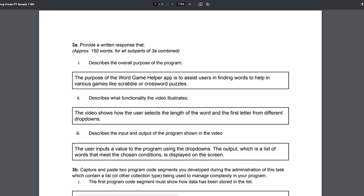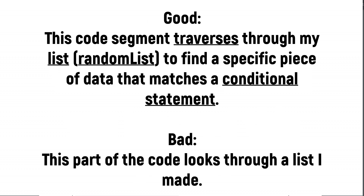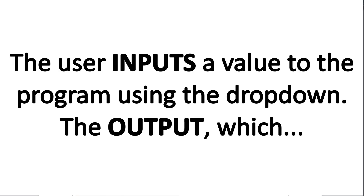It is very important in the Create task. You should be using the vocabulary you have learned this year. Use proper names. If you're talking about a variable or where something's happening in your code, name that line. Always use the variable or list or function names. Even use the data types — string, integers, stuff like that. The more specific you are, the better. And kids, it does not hurt to bold the words. If they are specifically looking for inputs and outputs, bold the inputs and the outputs. Make it easy for the reader.